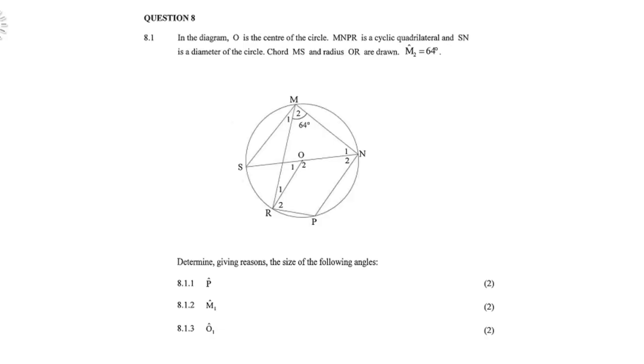Write Question 8.1. In the diagram, O is the center of the circle, MNPR is the cyclic quadrilateral, and SN is the diameter of the circle. Chord MS and radius OR are drawn. Angle M2 is 64 degrees. You must determine, giving reasons, the size of the following angles: angle P, M1, and O1.